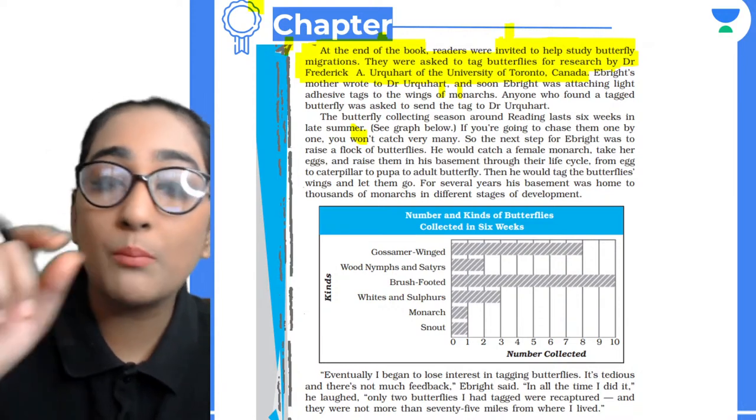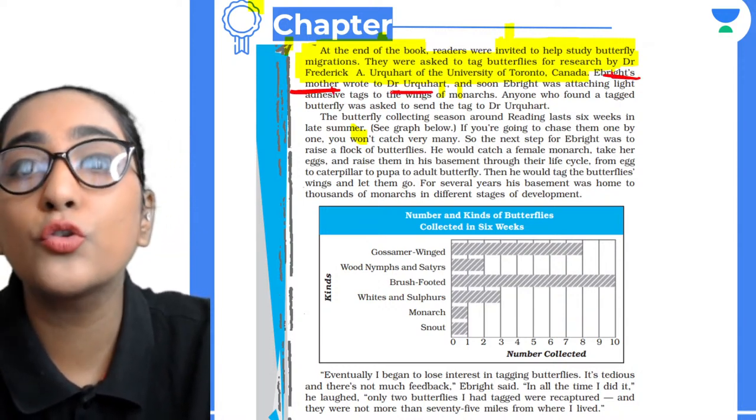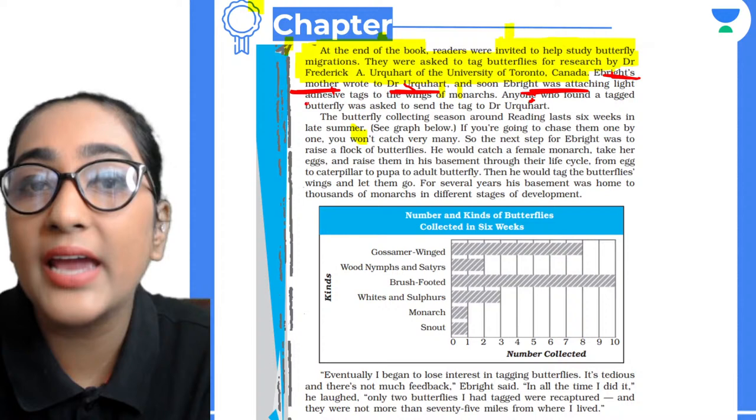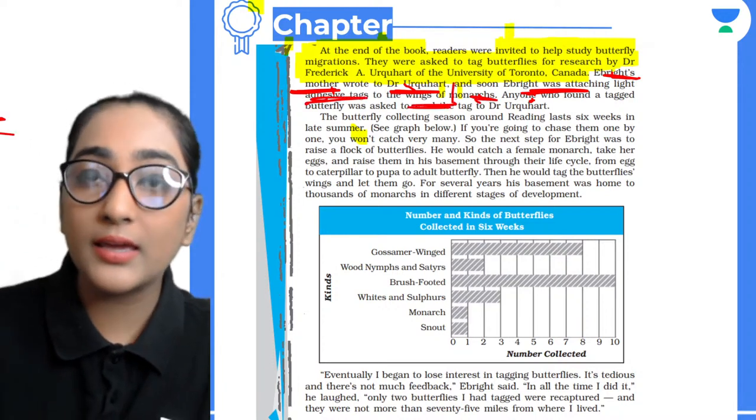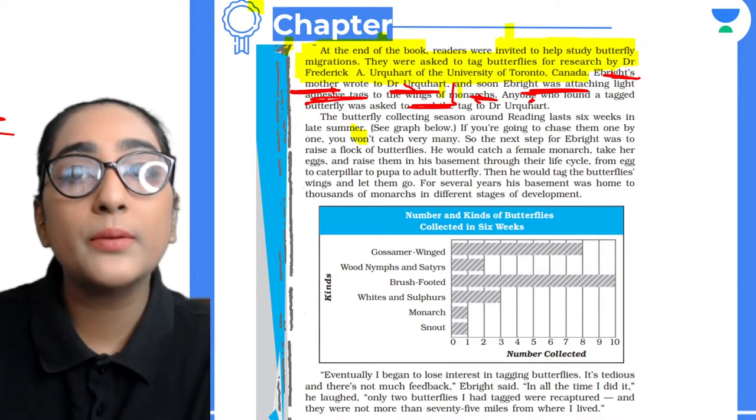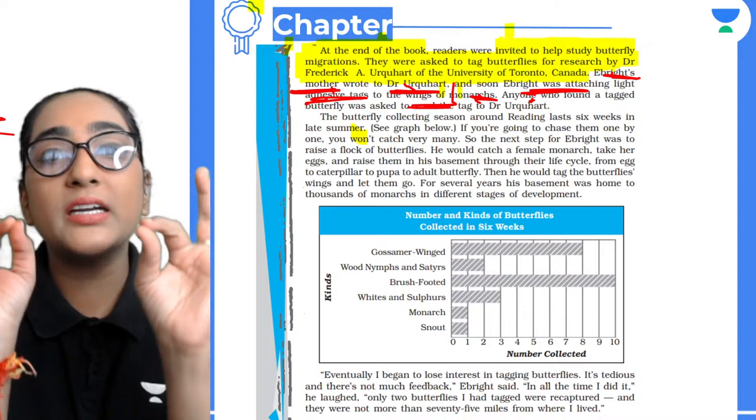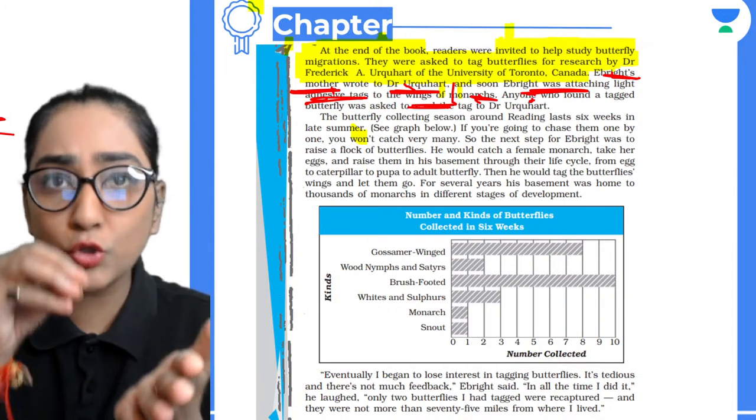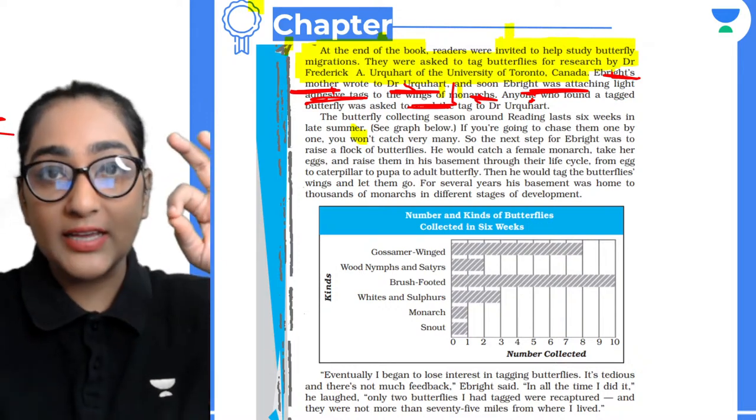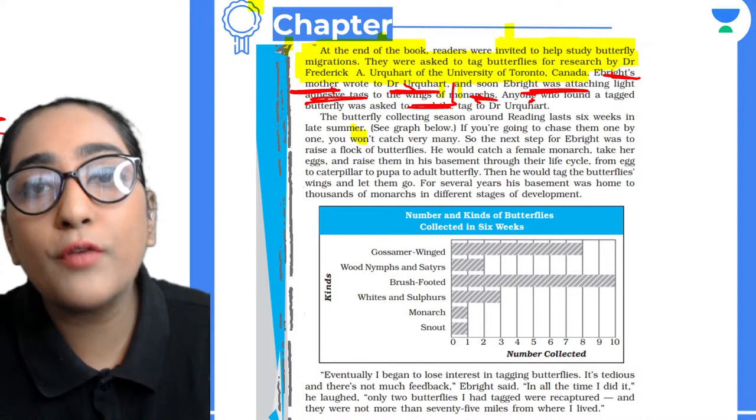Ebright's mother wrote to Dr. Urquhart. And soon, Ebright was attaching light adhesive tags to the wings of Monarchs. He was using a sticky substance to tag the butterfly wings and then sending them. Anyone who found a tagged butterfly was asked to send it to Dr. Urquhart.